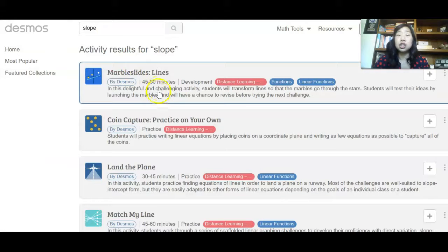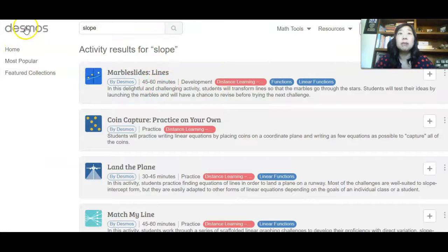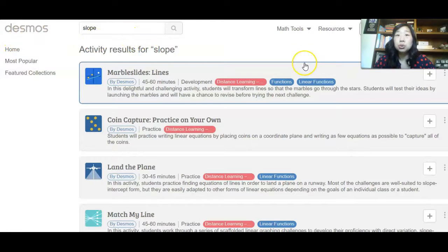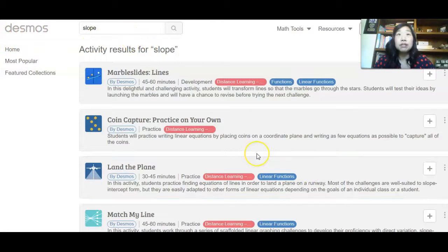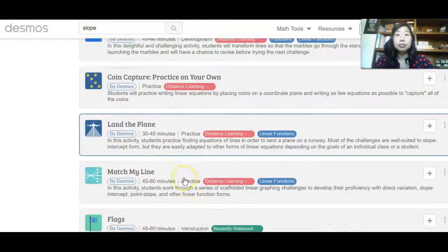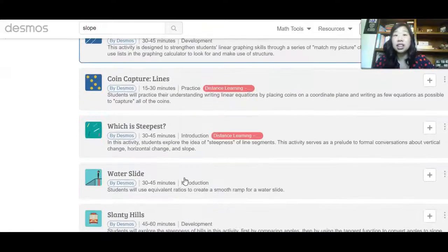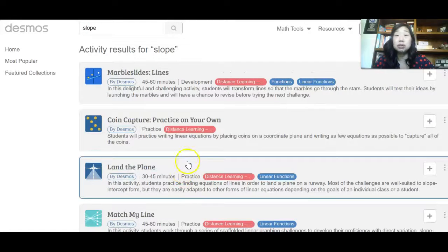And the third activity I want to show you is just activities that you can find on Desmos. Desmos is a free tool on the internet. All you have to do is just search Desmos. This is the website, and I've just searched slope. There are a ton of activities for you, free activities for you to choose from.